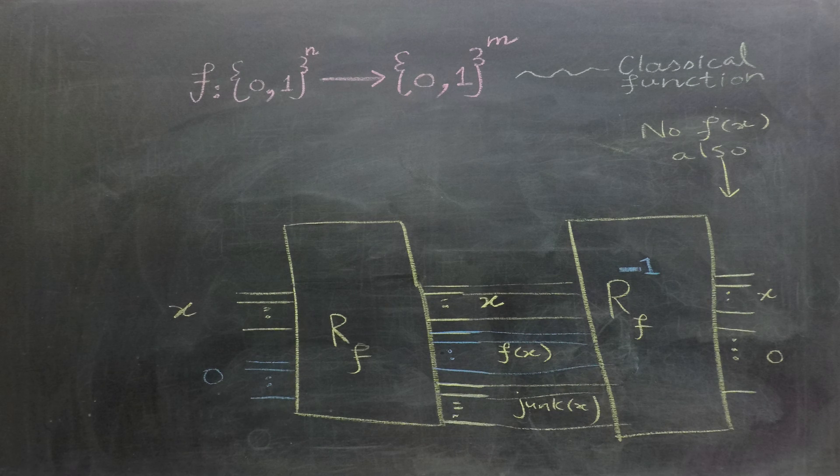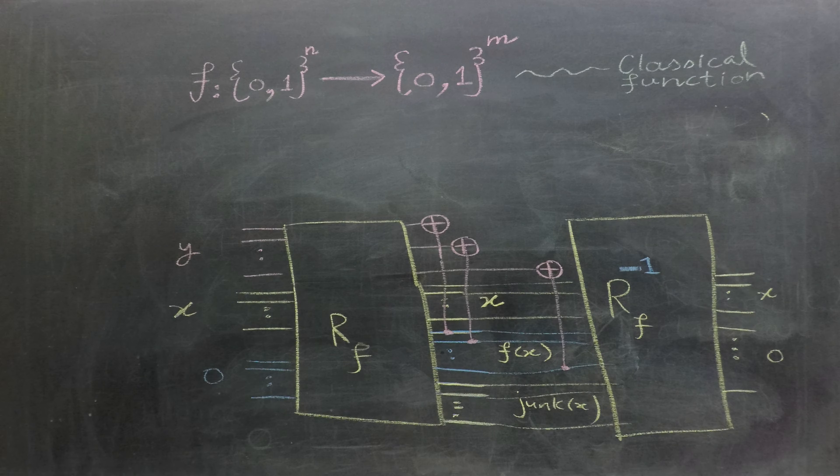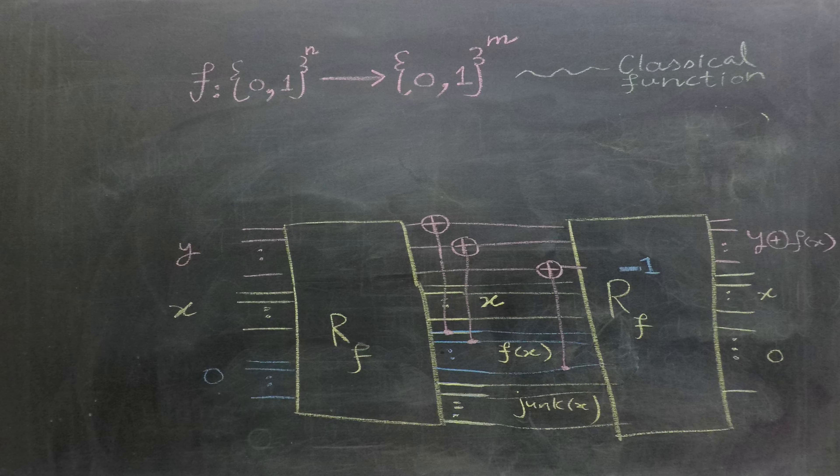To preserve the value of f of x, we introduce controlled-NOT gates. We use the output of f of x as the target and the input y as the control bit. This modified circuit produces the following outputs: f of x XOR with y, and a series of zeros. This newly modified classical circuit now produces our desired output and eliminates the junk.